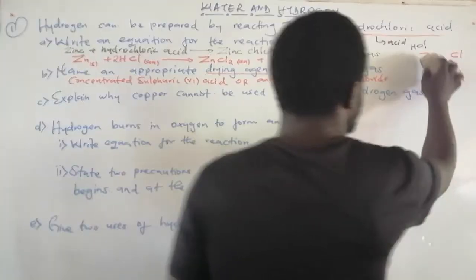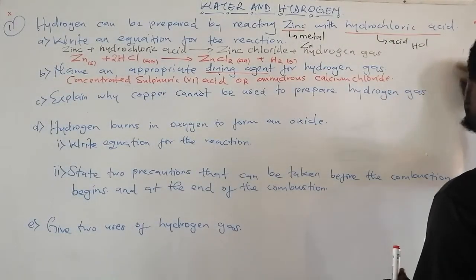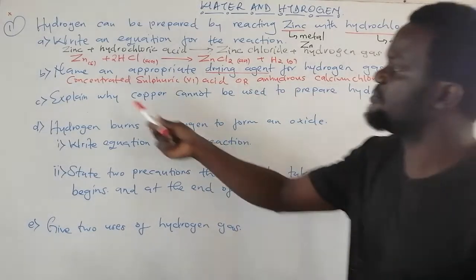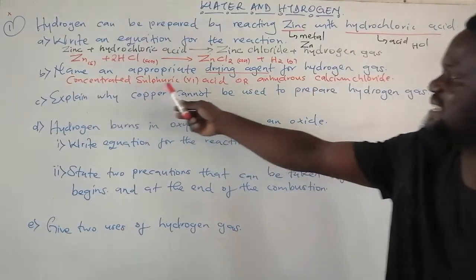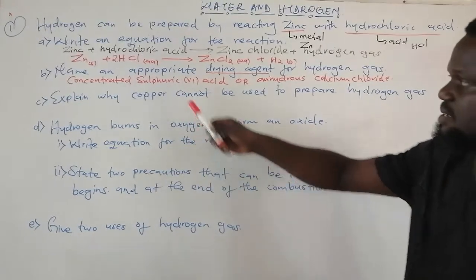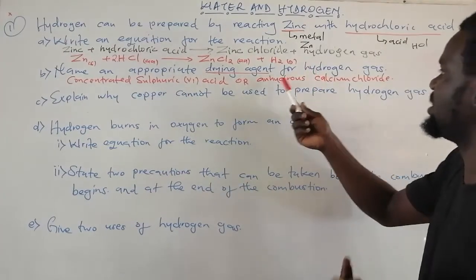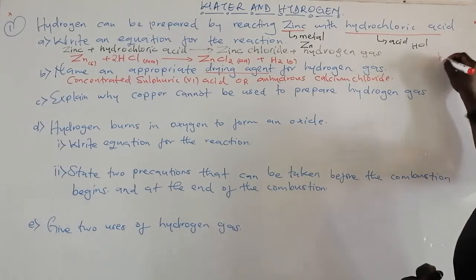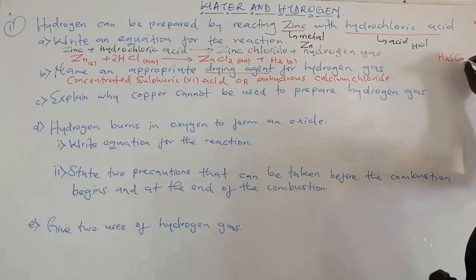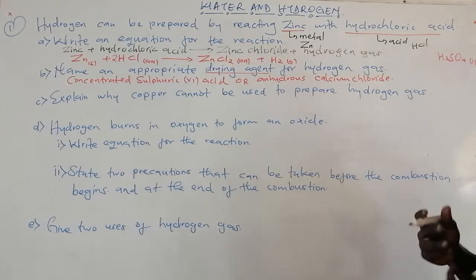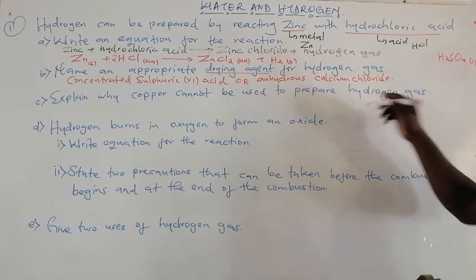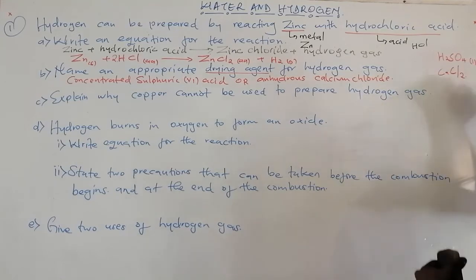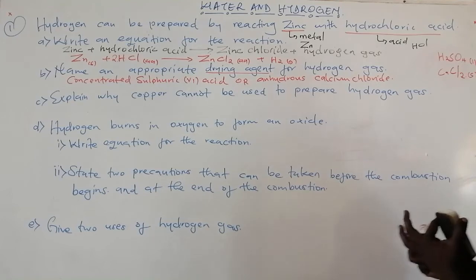Those are the two drying agents used to dry hydrogen gas. When I say anhydrous, it means it does not contain water of crystallization. You must always say concentrated sulfuric acid — it must be in concentrated form, so 'conc.' must be there. The word anhydrous must also be there. The formula of sulfuric acid is H₂SO₄, and in concentrated form it is in liquid state. Calcium chloride is in solid state and is anhydrous.